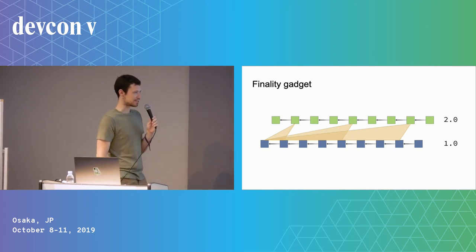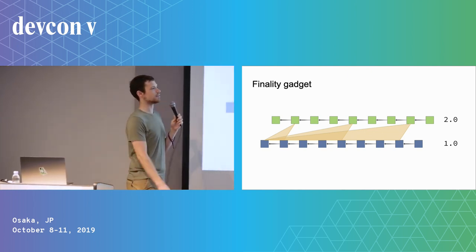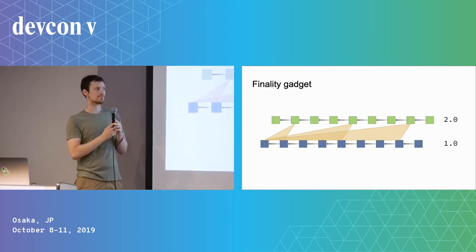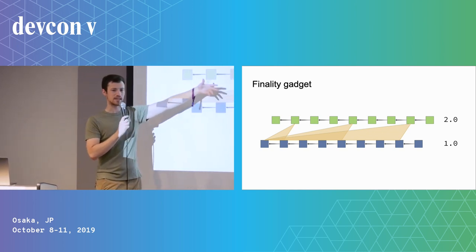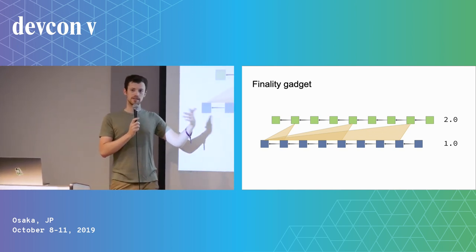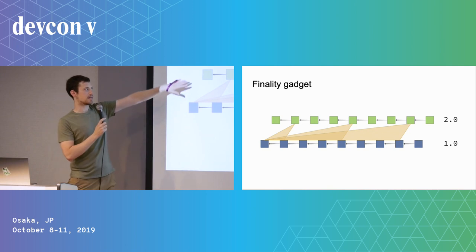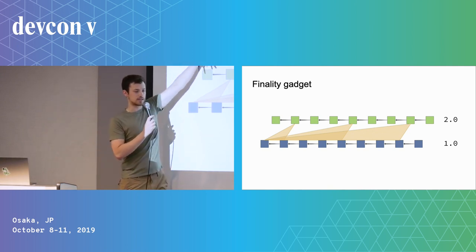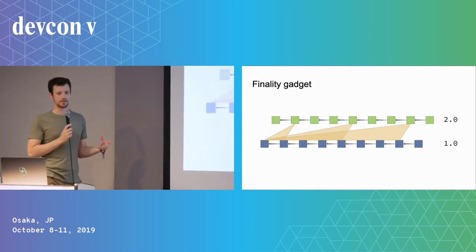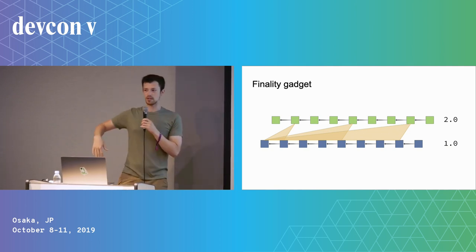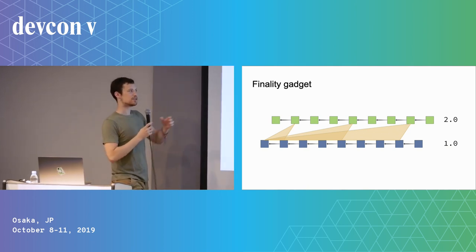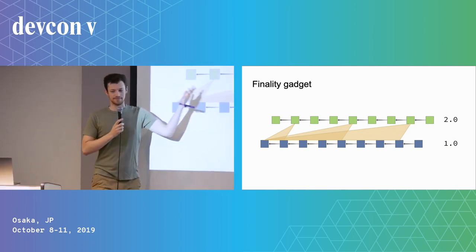Back to the finality gadget. The consensus on the beacon chain is called Casper, and part of Casper is finality. Finality is essentially a set of rules that say: once validators have made enough statements of a certain form, you can't fork the blockchain from a finalized block without burning a huge amount of the validators' bonds. You can make these bonds arbitrarily high to get arbitrarily high security. We then want to use this security on the proof of work chain.